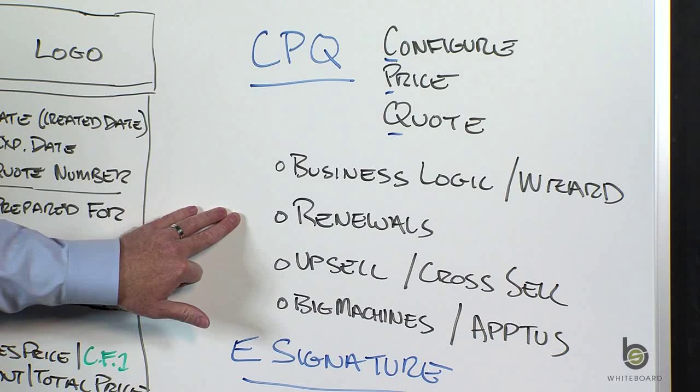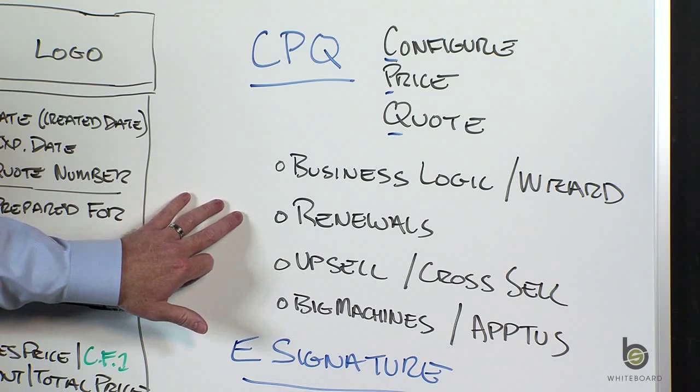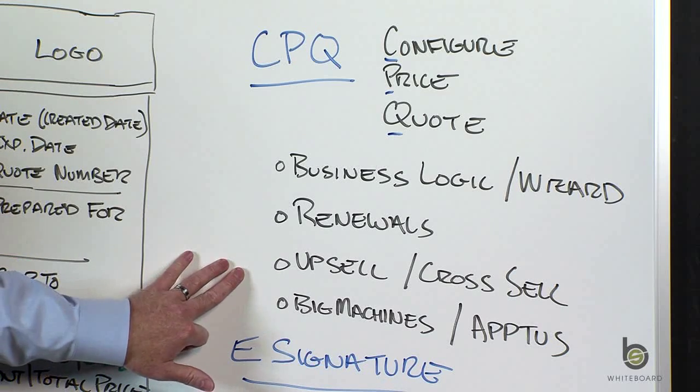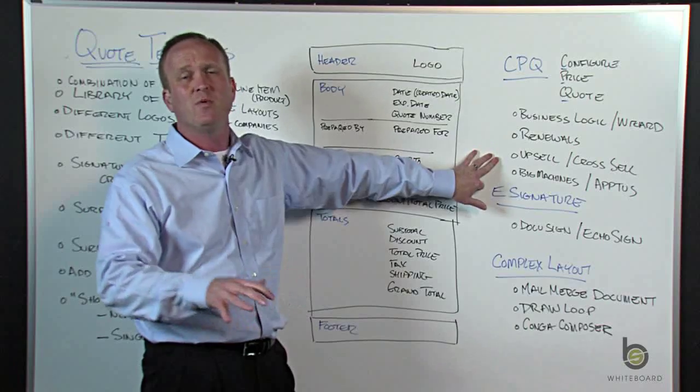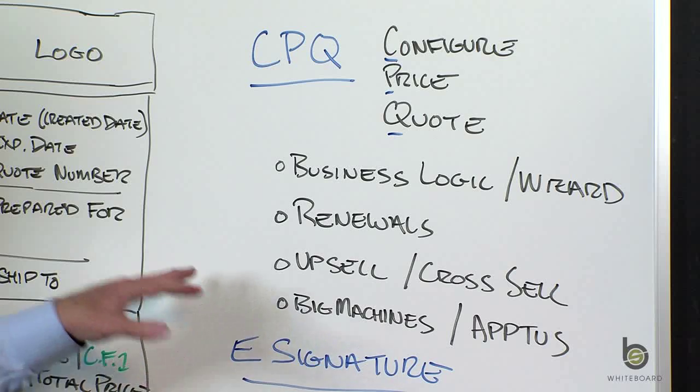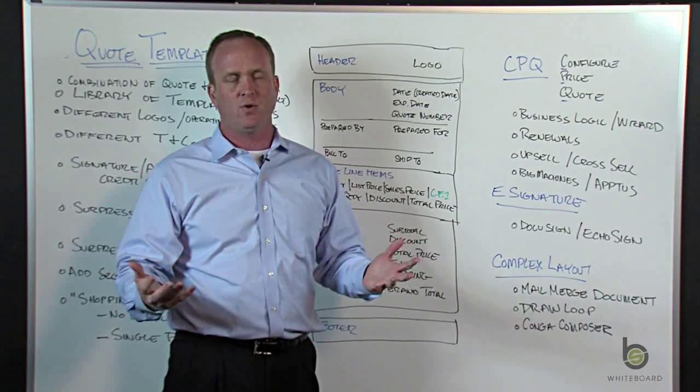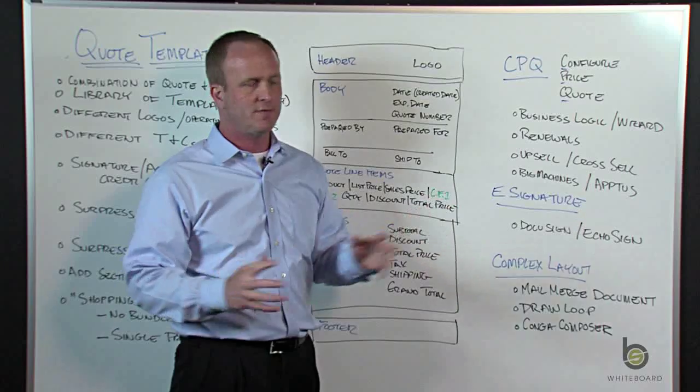CPQ modules or CPQ apps typically help you with the renewal process. If you sell renewals, they can streamline that business process. They can do upsell and cross-sell. So if you buy this, we recommend this. If you buy this, we upsell to that. A couple leaders in this space, Big Machines, which is actually bought by Oracle not too long ago, and Aptis. There are many others. We're not endorsing. We're just giving you a place to start, some names to think about.